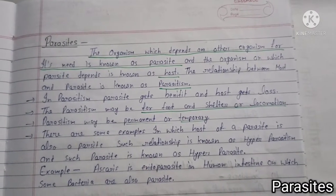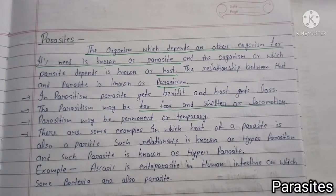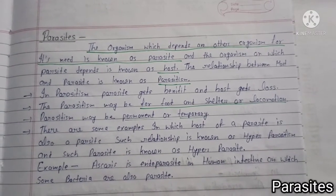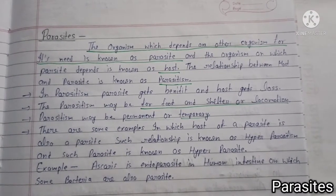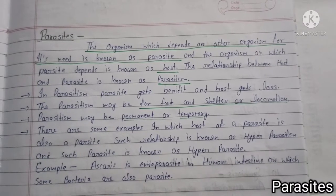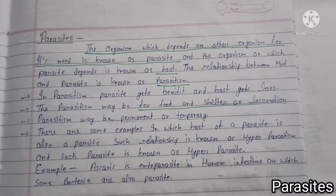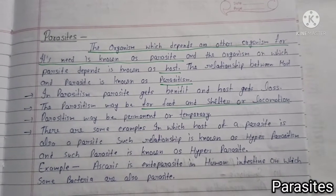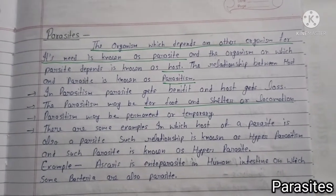There are some examples in which the host of a parasite is also a parasite. Such a relationship is known as hyperparasitism, and such a parasite is known as a hyperparasite. For example, Ascaris is an endoparasite in the human intestine, on which some bacteria are also parasites.